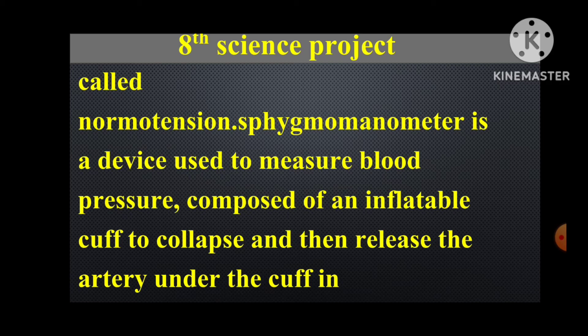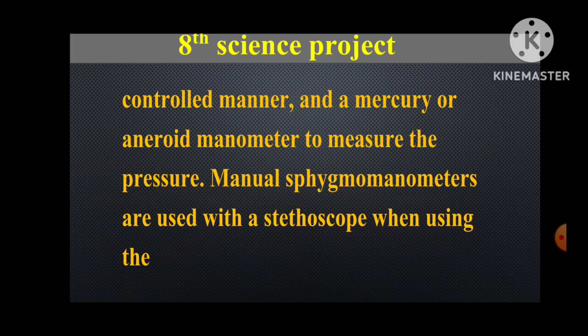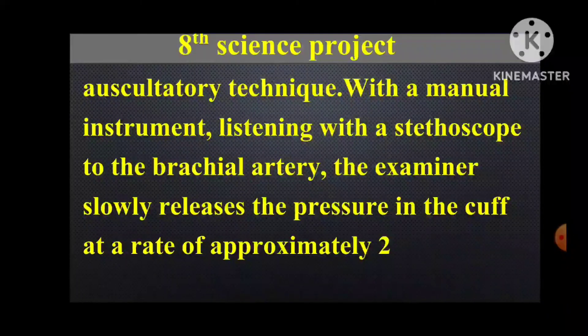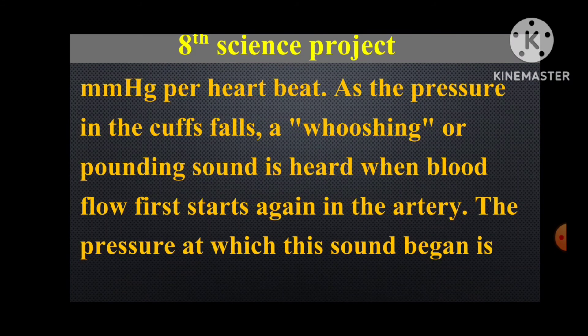A sphygmomanometer is a device used to measure blood pressure, composed of an inflatable cuff to collapse and then release the artery under the cuff in a controlled manner, and a mercury or aneroid manometer to measure pressure. A manual sphygmomanometer is used with a stethoscope using the auscultatory technique — listening with a stethoscope to the brachial artery. The examiner slowly releases the pressure in the cuff at the rate of approximately 2 mmHg per heartbeat.